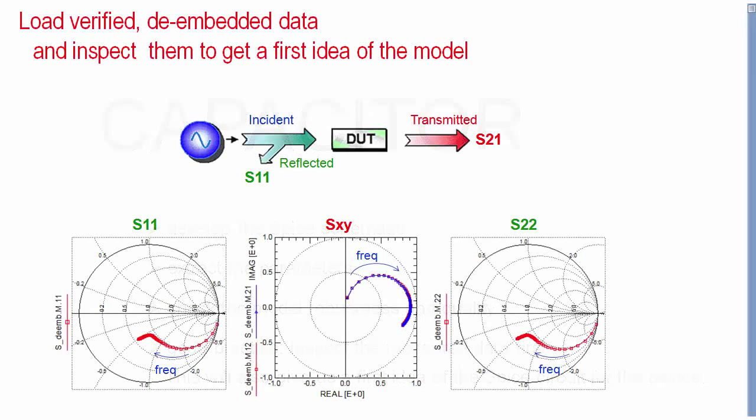In both the Smith chart of the S parameters S11 and S22, and also in the polar diagram of S21 and S12, the measurement curves turn clockwise with increasing frequency. In the polar diagram of the power transmission, for example S21, the lowest frequency is located here and the highest here. By the way, for passive components, the forward transmission is always identical to the reverse transmission. That's why I simply call it SXY.